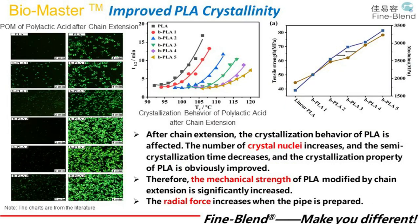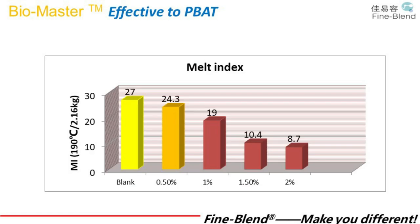In the POM diagram, the left column shows the state at two minutes and the right shows the state at four minutes. The green areas represent crystallization, showing that Bio Master is conducive to nucleation and improves the crystallization capacity of PLA. From the literature, mechanical properties are also increased because the crystallization ability is improved.